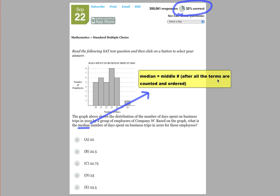It's the middle number after all the terms are counted and ordered. What I mean by counted is, for example, if we're going to use this graph here, five employees had 20 days of business trips. So instead of just counting 20 once, I have to count 20 five times. That's what I mean by counted, and by ordered I mean put from least to greatest. The ordered part we don't really have to do here since they are already in order, but we do have to count them.